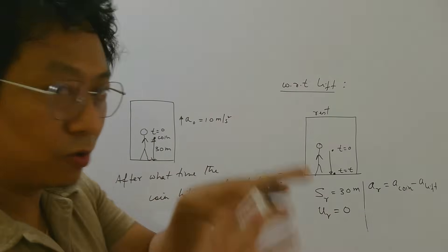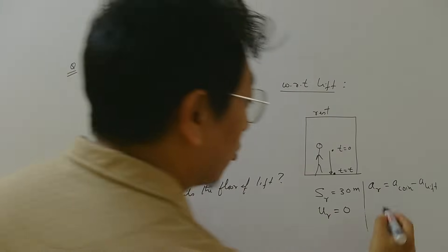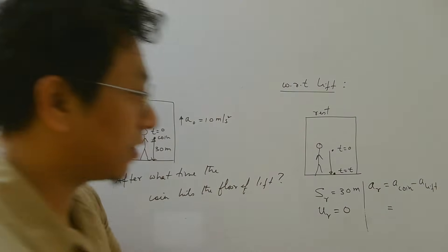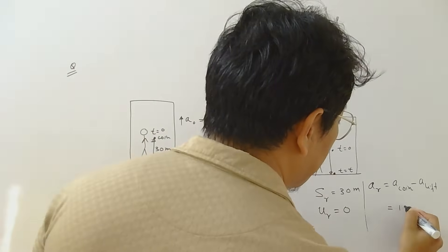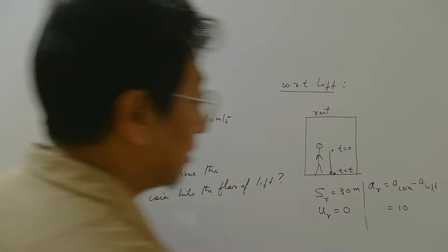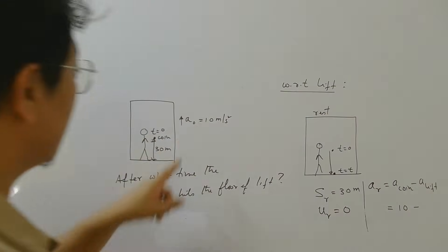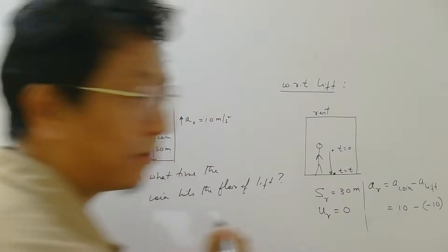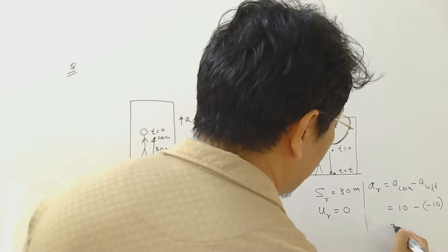Since coin is falling freely, there is no contact with anything. Coin's acceleration from ground frame will be g only, free fall right? So this will be plus 10 because I am taking down positive when body comes down. Lift acceleration is 10 up, remember? So I have to write minus 10. Be very careful. So this will give you 20.